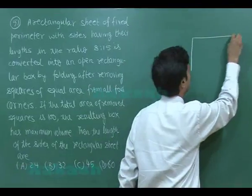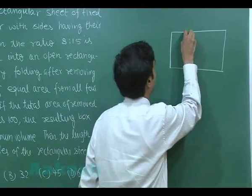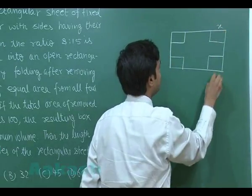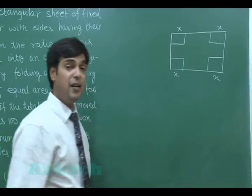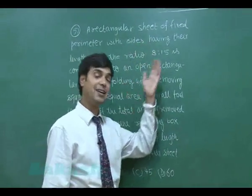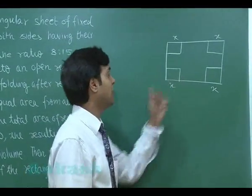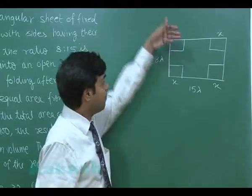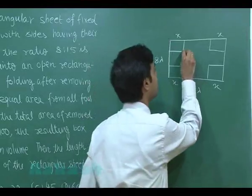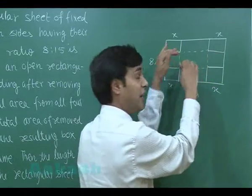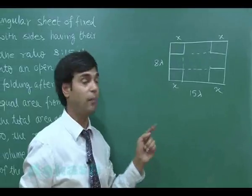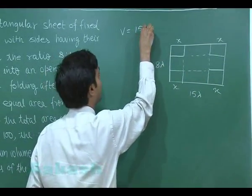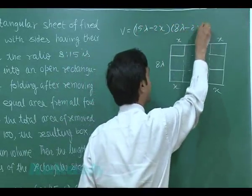Let us draw the rectangular sheet first and remove four squares. Let the four squares removed from the four corners each have side x. Consider the ratio 8:15 — let sides be 15λ and 8λ. The question says these four corners are removed, then fold up the sides. The volume of the rectangular box is V = (15λ − 2x)(8λ − 2x)(x).